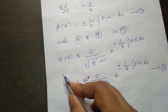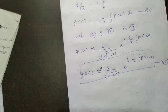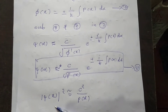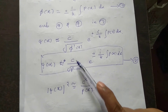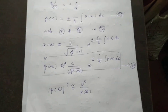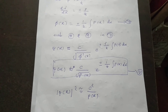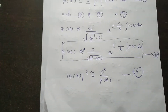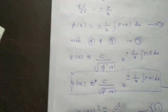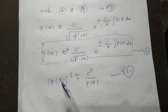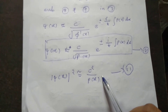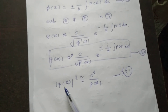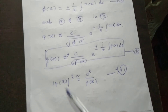This is the WKB wave function, which is equation number 8 in the box as the general solution. The probability density psi squared equals c squared divided by p(x). This is an important result. The probability is inversely proportional to P(x), meaning where momentum is large the probability is small, and where momentum is small the probability is large. This agrees with classical mechanics.